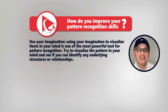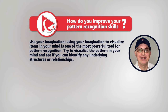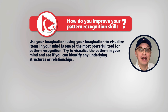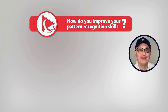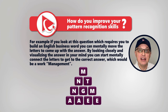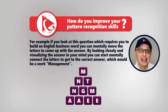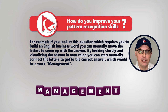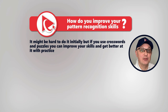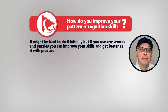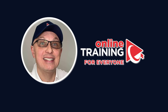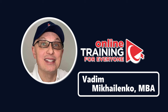One key way to improve pattern recognition skills is to use your imagination. You can visualize items in your mind — it's one of the most powerful techniques. For example, if you're required to build an English business word using all letters only once, you can mentally connect the letters to get the answer, which is the word 'management.' If you do crosswords and puzzles, you can improve this skill with practice. Do you have any other interesting techniques? Please share them in the comments.